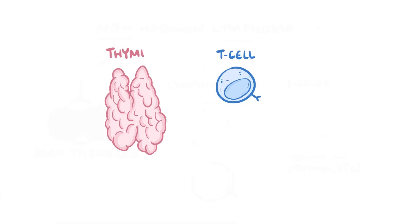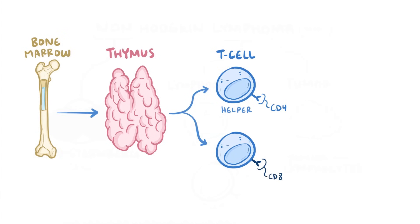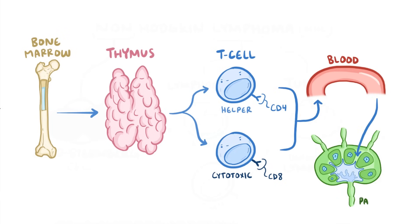T cell development starts in the thymus from precursors that arise in the bone marrow. In the thymus, these precursor T cells mature and express either CD4 on helper T cells or CD8 on cytotoxic T cells, sometimes known as suppressor T cells. Mature T cells circulate in the blood and are found in the paracortex of the lymph nodes.